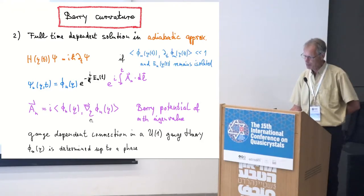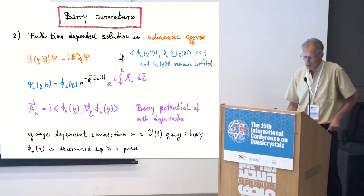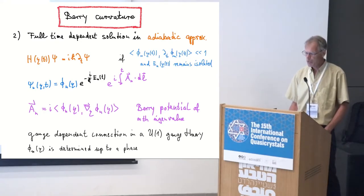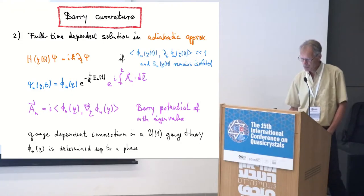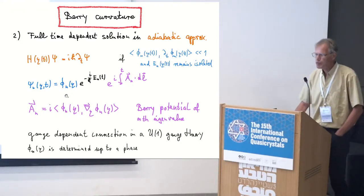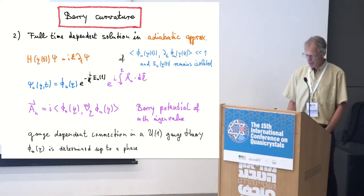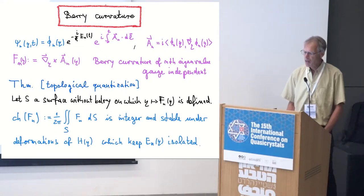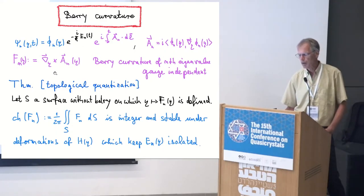The correction to the stationary solution is just given by a phase, computed using what's called the Berry potential. The Berry potential of the n-th band, A_n, is this matrix element involving the eigenfunction and the gradient of the eigenfunction with respect to the extra parameter. Note that this doesn't depend on time anymore — only geometry plays a role. If you know a little bit about gauge theory, you see that this is the connection of a gauge theory, because quantum mechanics in the Schrödinger picture is a U(1) gauge theory.